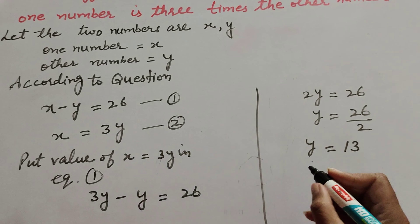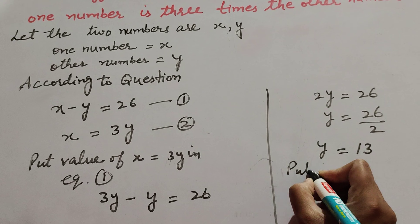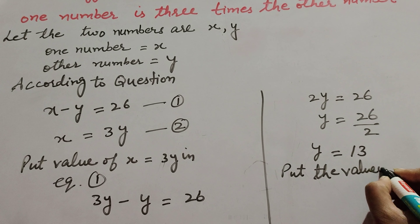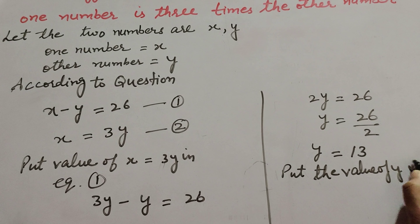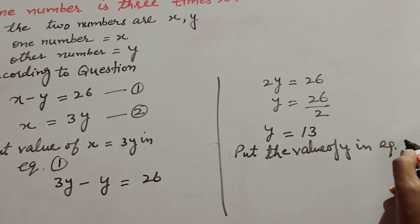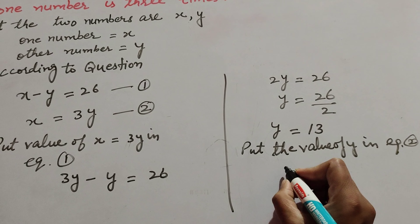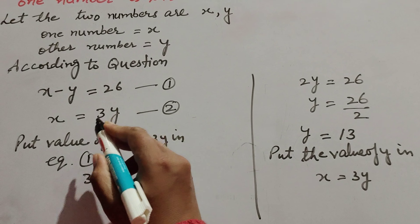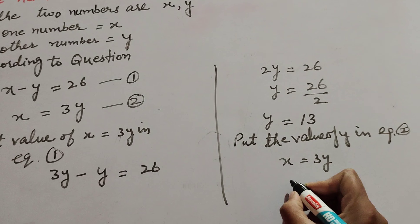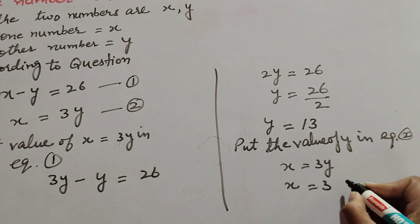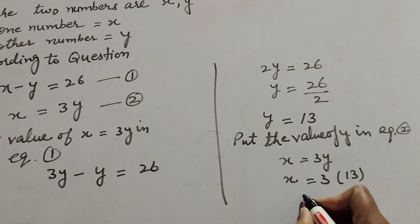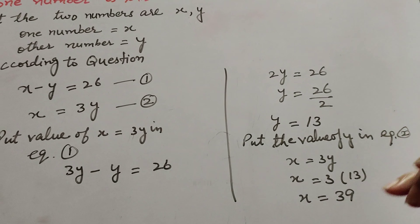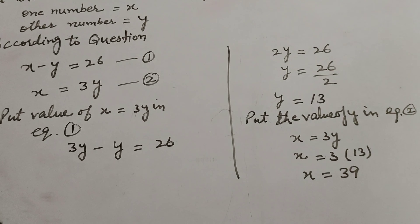Now we find the value of x. We put the value of y equals 13 into equation number two, which is x equals 3y. So x equals 3 multiplied by 13, and x equals 39.